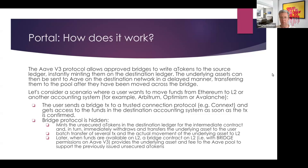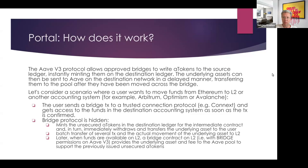For example, if you have 1 ETH and therefore 1 aToken, you send it from Ethereum to Arbitrum. The aToken is minted on the other chain immediately. Then, after a certain batch of transfers accrues, the underlying asset — the real ETH — is sent from Ethereum to the Arbitrum network.